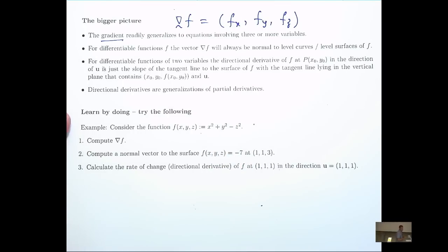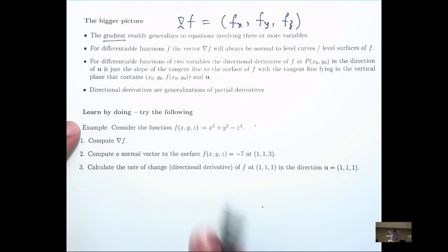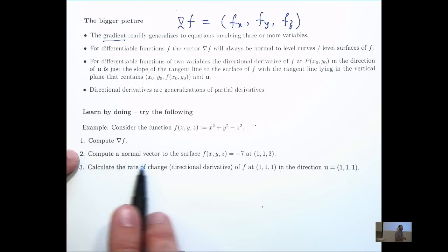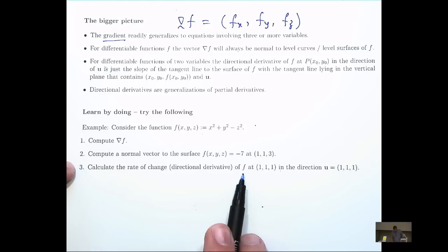Here's an example I'm going to leave for you to do. Here's a function of three variables. So compute grad f, compute a normal vector to this surface, the level surface here at this point, and calculate the directional derivative of this point, of this function at this point in this direction.